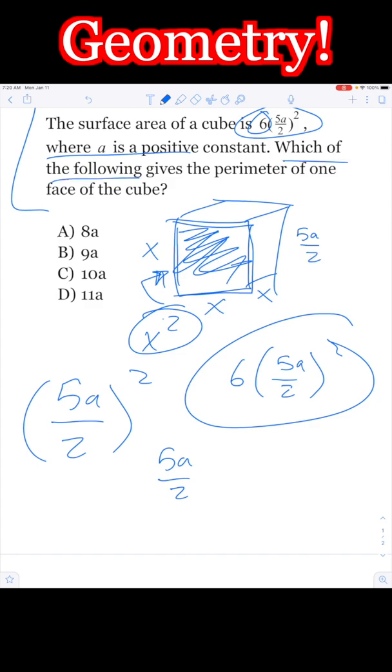The question is asking which of the following gives the perimeter of one of the faces? Well, if one edge is 5a over 2, the perimeter of one face is just going to be times 4. So it's going to be 10a. Boom!